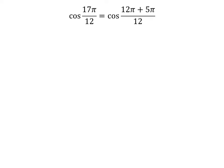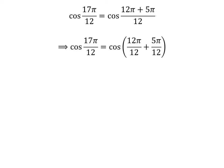17 times pi is equal to 12 times pi plus 5 times pi, so cosine of 17π/12 is equal to cosine of (12π + 5π)/12. The fraction can be expressed as a sum of two fractions, so cosine of 17π/12 equals cosine of (12π/12 + 5π/12). Cancelling out the common factor gives us cosine of 17π/12 is equal to cosine of (π + 5π/12).